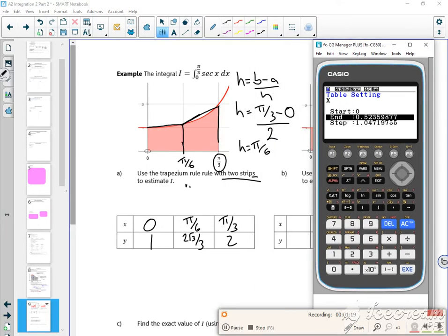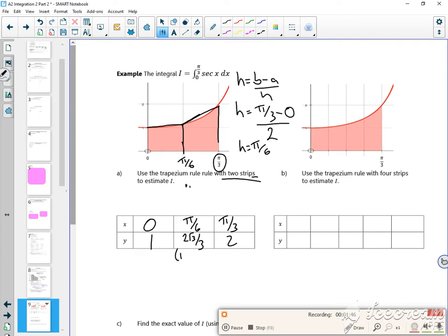So the end bit is π/3, shift π divide 3, and the step was π/6, shift π divide 6. Now you can see that it does this numerically. The answers you'll get are numerical numbers, so you've got 1, and instead of 2√3 I've got 1.1547. If I use my calculator to do it, that will give me the right answer.